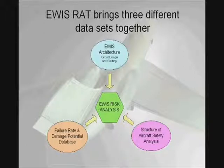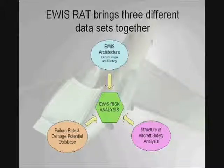In order to do this, the EWIS RAT brings together three different datasets: the EWIS architecture, which can be found in circuit design and routing; the structure of aircraft safety analysis, such as fault trees and CMAs, or common mode analyses; and lastly, failure rate and damage potential databases. These will be described later.